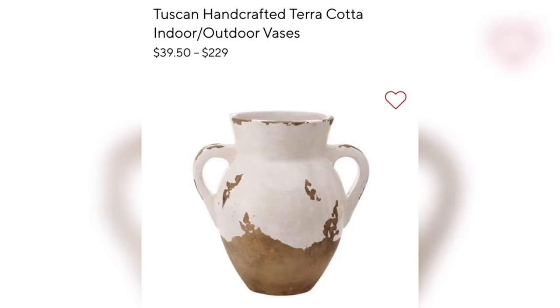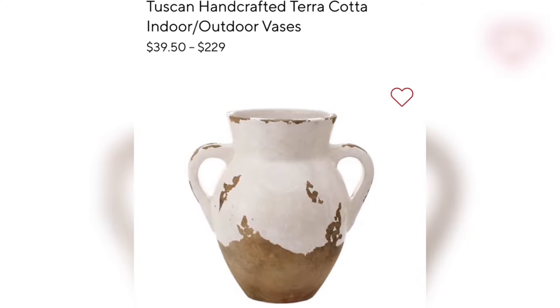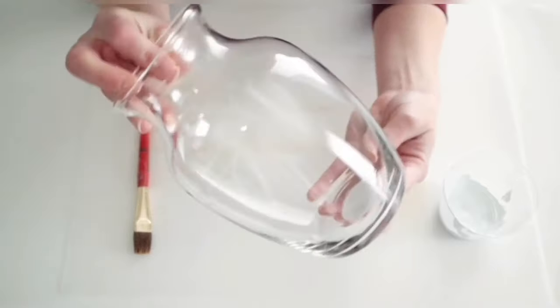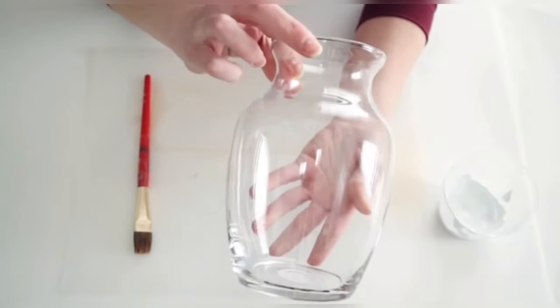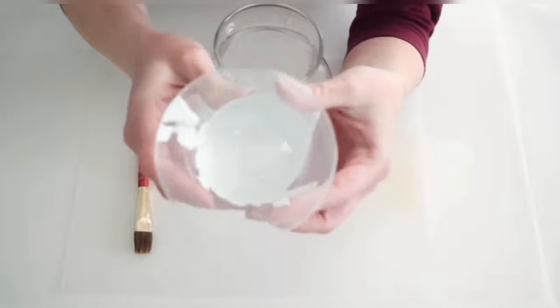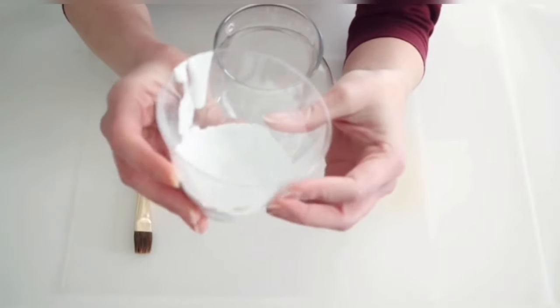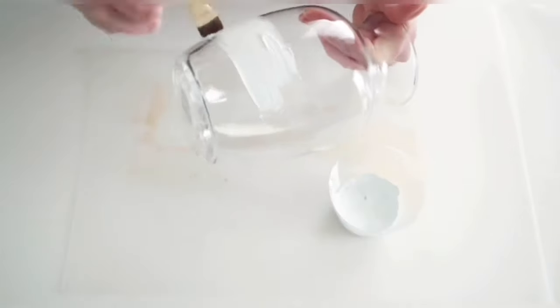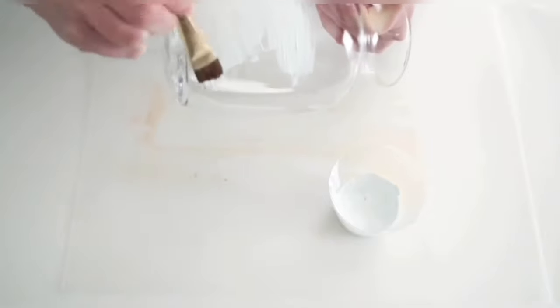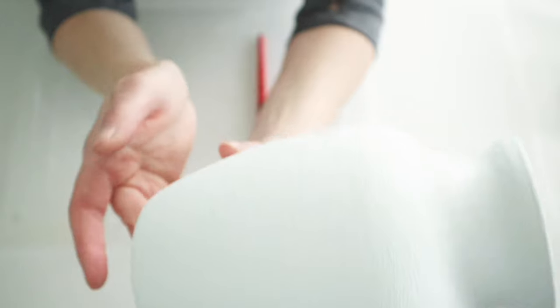My first thrift store project was inspired by this terracotta vase from Pottery Barn. Now I picked this up at my local thrift store for 50 cents, but these are similar to the vases you can get at Dollar Tree. And I went ahead and mixed some of my white chalk paint with some baking soda and I'm going to give it two coats.